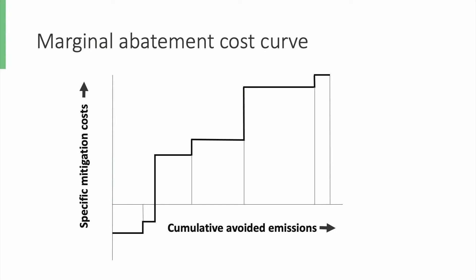The basic thing is that on the horizontal axis you see cumulative emission reduction and on the vertical axis you see the marginal costs of emission reduction or marginal abatement costs. The graph can be used in two ways.